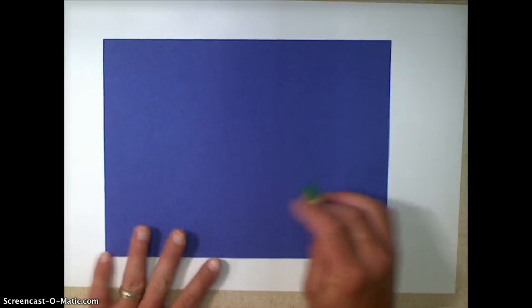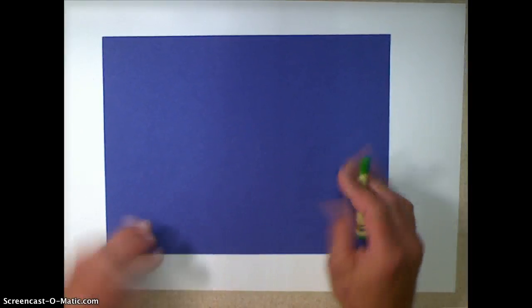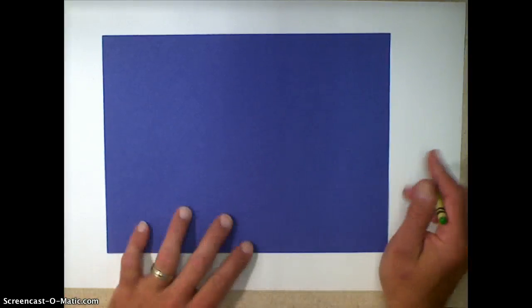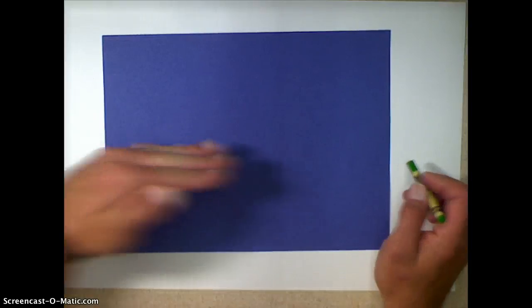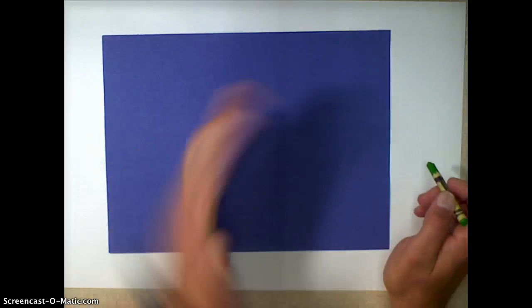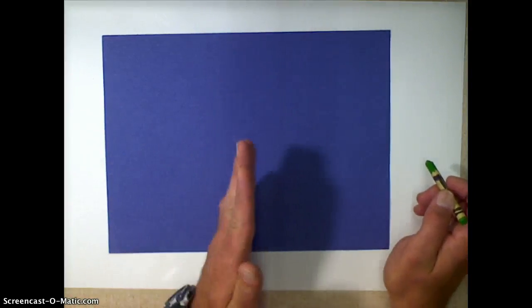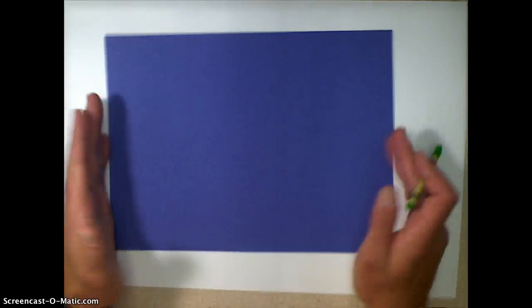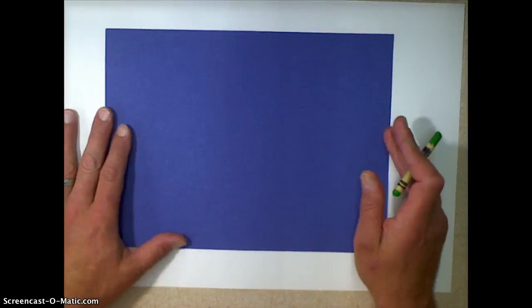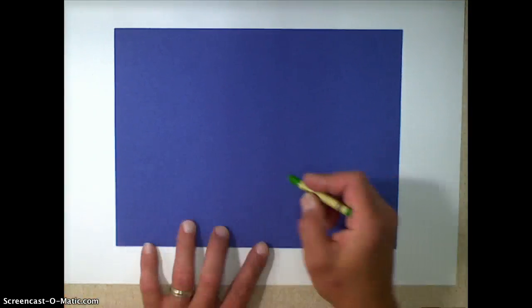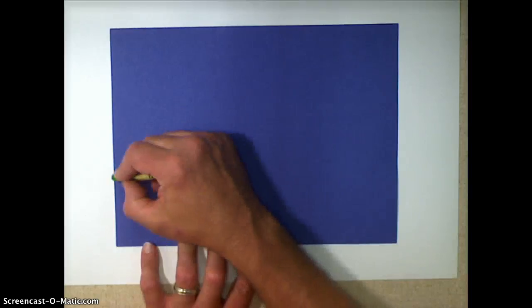To start we're going to make a horizon line. Now a horizon line is a line that goes across your paper, and it goes horizontally. Vertical is up and down. So we're going to go across and our paper is horizontal. I'm going to make a line below half of my paper.